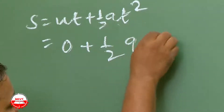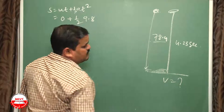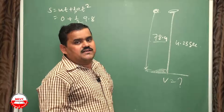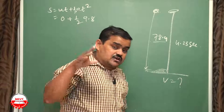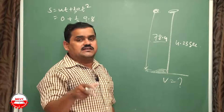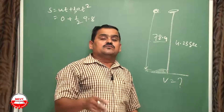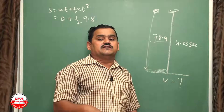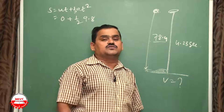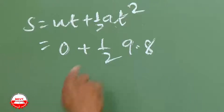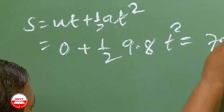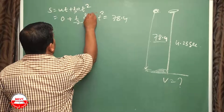Take g = 9.8 because the values are in decimals. If the question gives a whole number, take g = 10. If not specified, use 9.8. Many students get confused about when to use 10 versus 9.8 — if g = 10 is stated in the question, use it; otherwise default to 9.8. So: ½ × 9.8 × t² = 78.4, giving 4.9t² = 78.4.